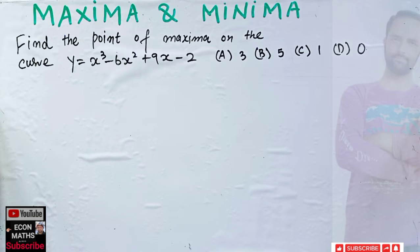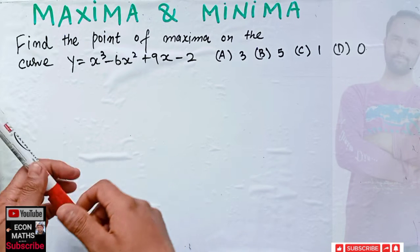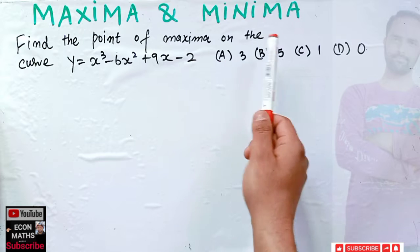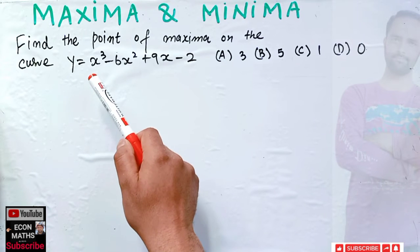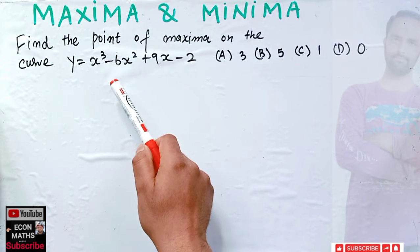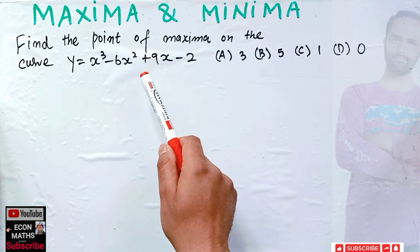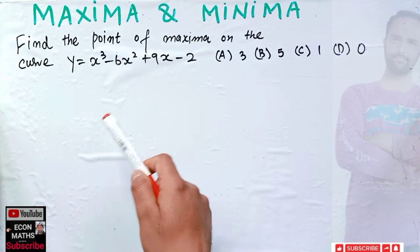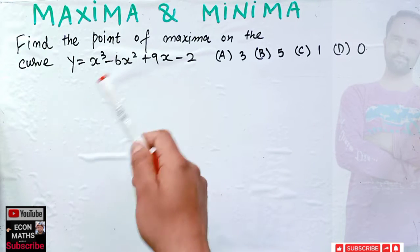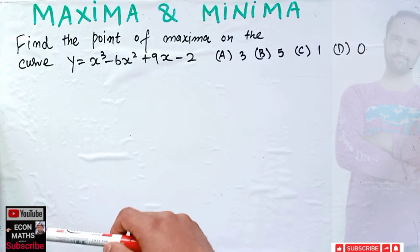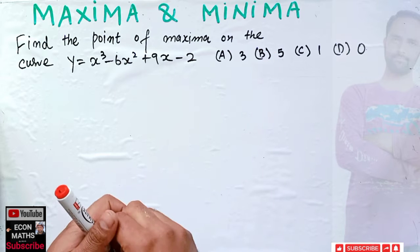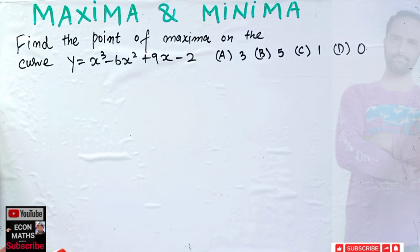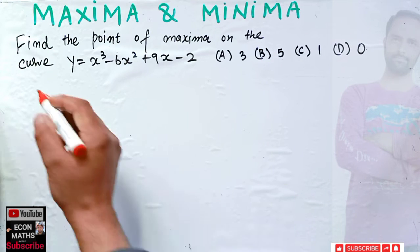Let us solve a question on finding maxima. The question is: find the point of maxima on the curve y = x³ - 6x² + 9x - 2. We have to find out the point where this curve reaches its maximum.